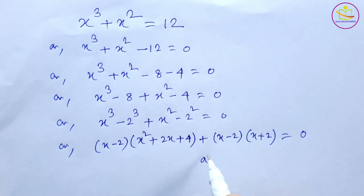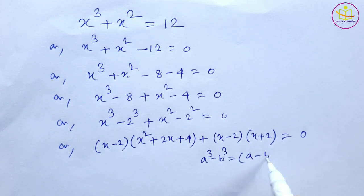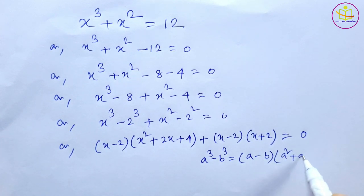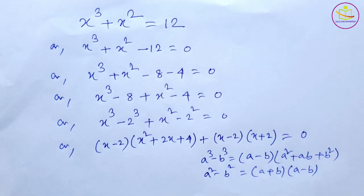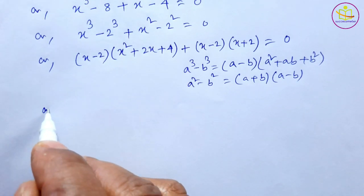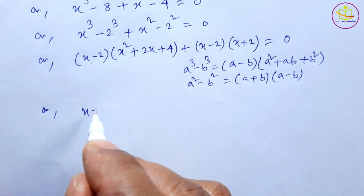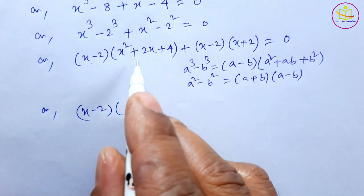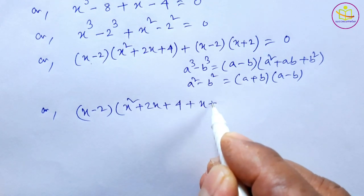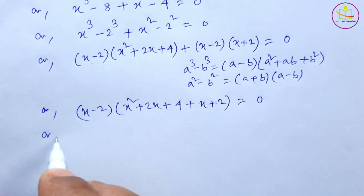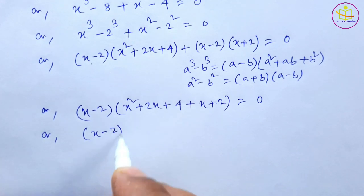We use the formulas: a³ - b³ = (a - b)(a² + ab + b²), and a² - b² = (a + b)(a - b). Taking (x - 2) as a common factor, we get (x - 2)(x² + 2x + 4 + x + 2) = 0.